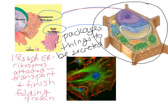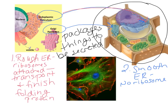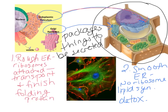The smooth ER has no ribosomes, which gives it its smooth appearance. The smooth ER is important for lipid or fat synthesis and for detoxification — breaking down poisons and toxins within the cell. The cytoskeleton is found in most eukaryotic cells and does exactly what your body's skeleton does for the cell: it supports the cell, sometimes allows for transport, and occasionally allows the cell to move.